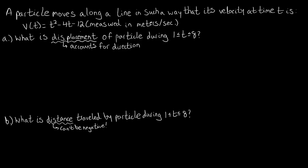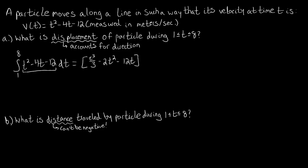To find displacement, we take the integral from one to eight of our v of t function. So we have the integral from one to eight of t squared minus 4t minus 12 with respect to t. Taking the antiderivative using the power rule, we get t cubed over 3 minus 2t squared minus 12t, evaluated from one to eight.